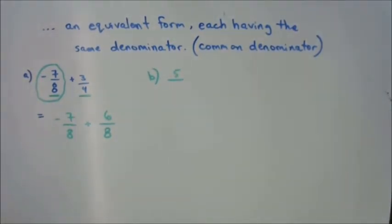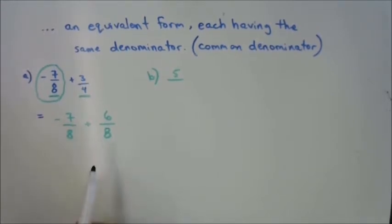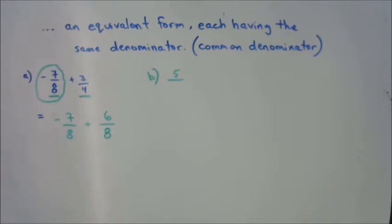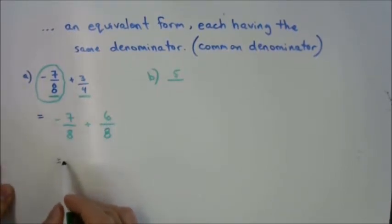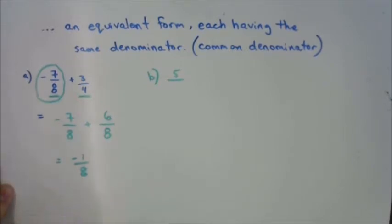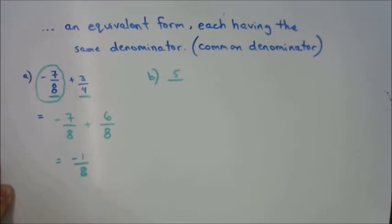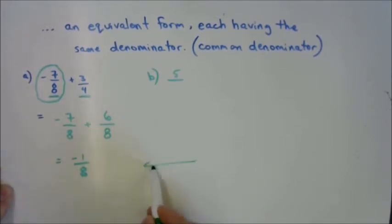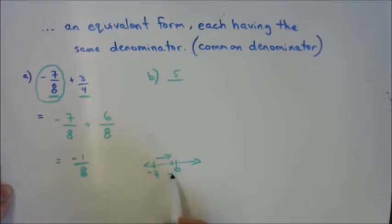Does the denominator change when you add? When you're adding eights, you're adding eights together — like a chocolate bar split into eighths. So how many eighths do you have at the end? The denominator stays eight. So this would be negative seven plus six, which is negative one-eighth. It's a negative plus a positive — same as you would do with integers. Think of being at negative seven on the number line and adding six: you don't get past zero, you get to negative one. So you have negative one-eighth.